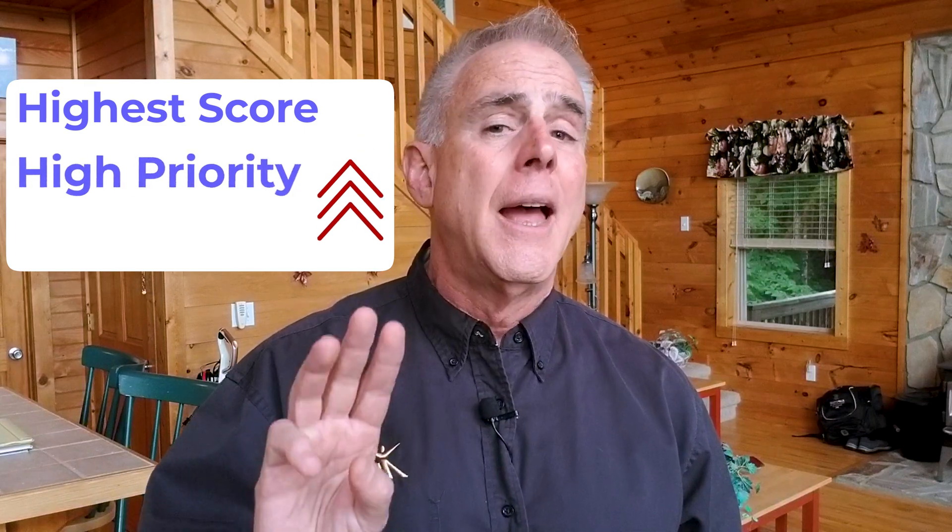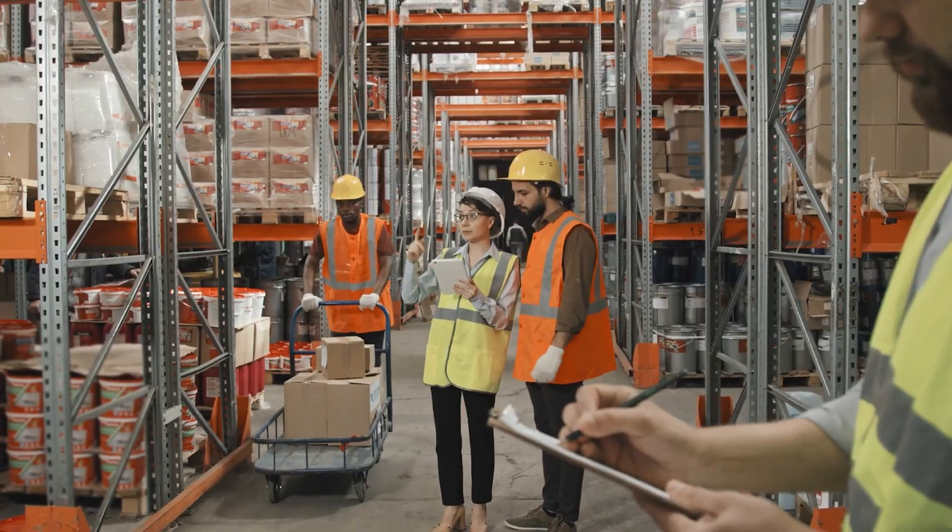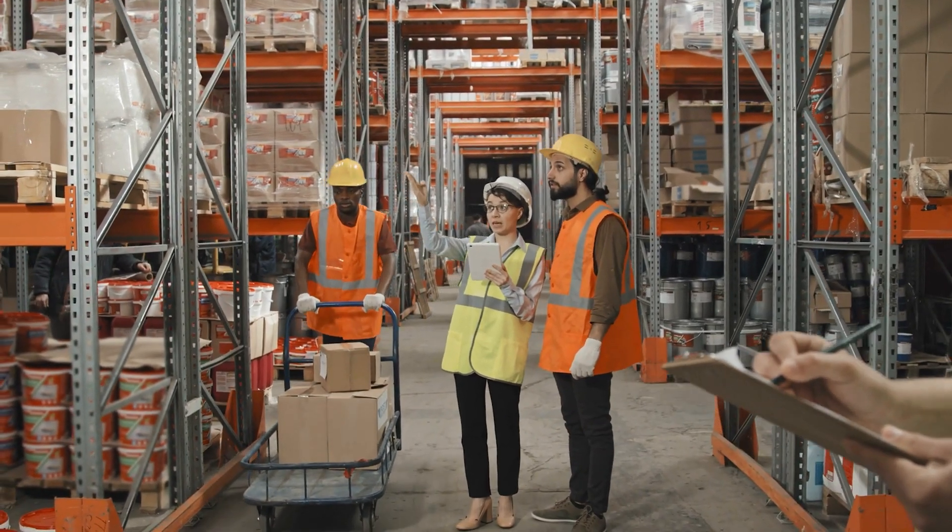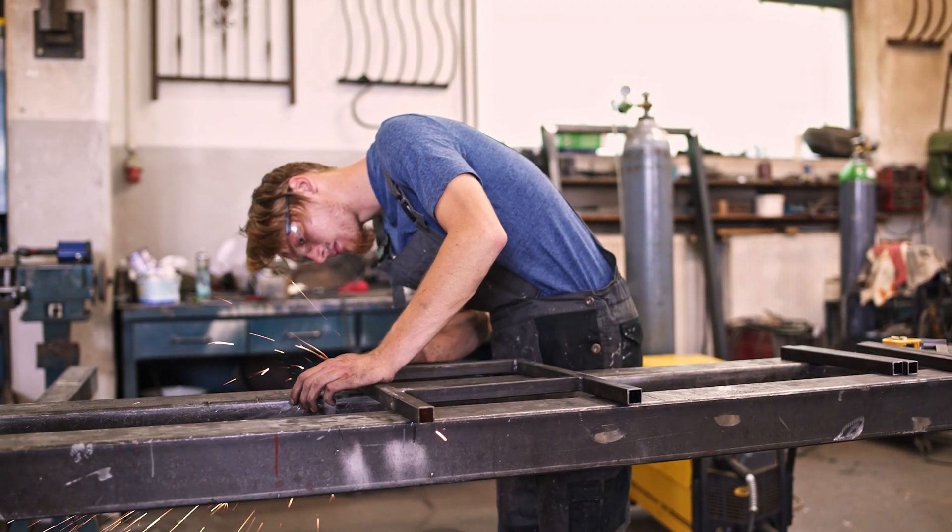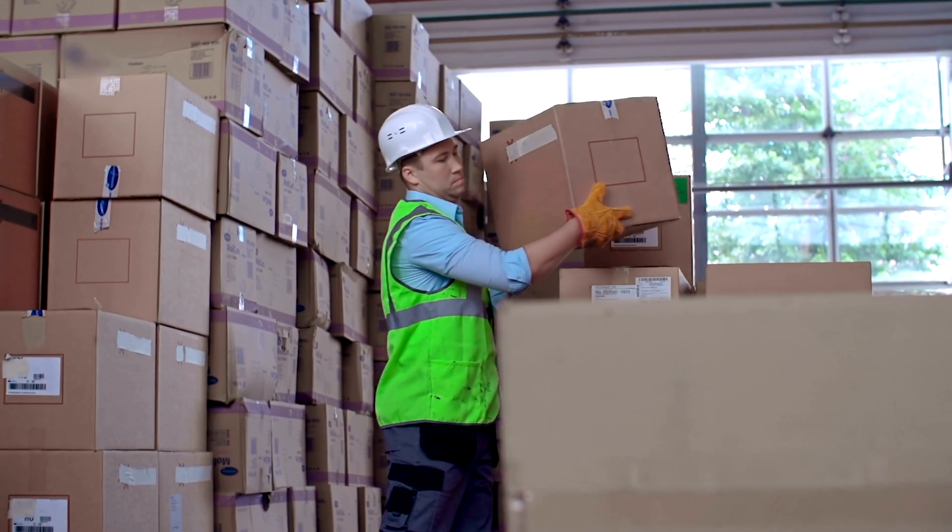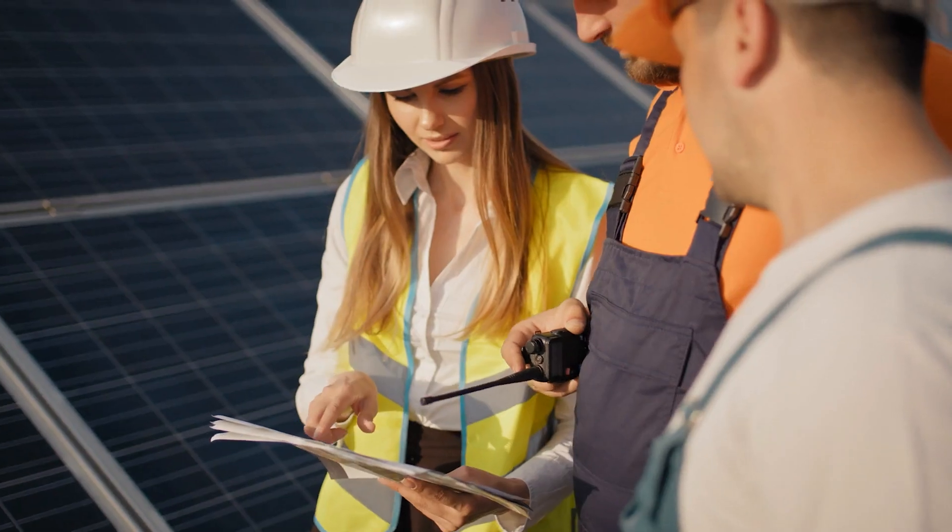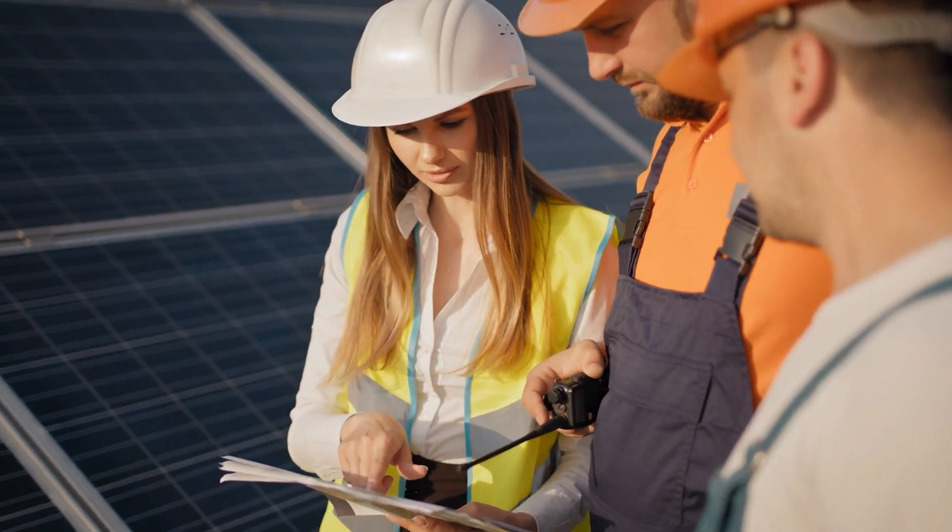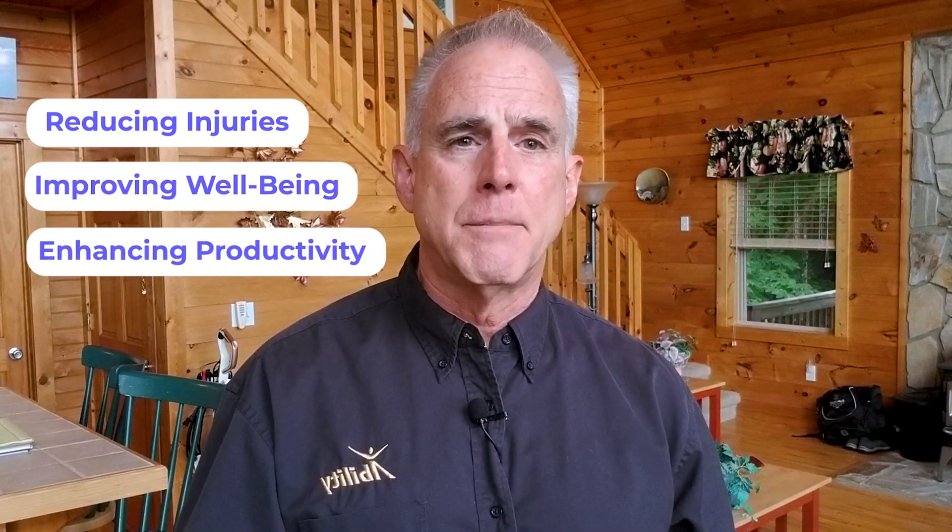So it's a very good way of prioritizing our exposure, what we need to go after first. A high score means high priority and high risk. And then it gives us a way to go after these things in terms of intervention and what kind of tools we might use. For instance, we might look at tool design, workstation layout, employee work schedules and rest schedules, training, employee training to reduce exposure and ergonomic risk. By doing this, we can address reducing injuries, improving well-being, and enhancing productivity all at the same time.